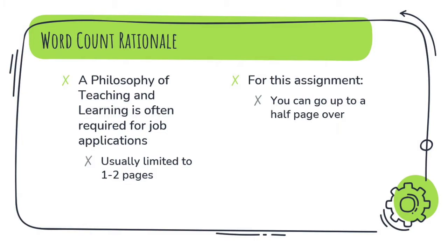The reason we've assigned such a low word count is because a philosophy of teaching and learning is a document that's often requested for job applications in education, and in these job applications they usually limit documents to one to two pages. Anything longer becomes a lot of reading for hiring managers and therefore isn't too popular. Online you will see some examples that are longer — they do tend to be longer once you're a professor applying for promotion or tenure — but otherwise they're usually limited to one to two pages. For the purposes of this course, it's okay if you go a little over, up to half a page over, but we encourage you to keep it concise so you can realistically use this assignment for job applications.